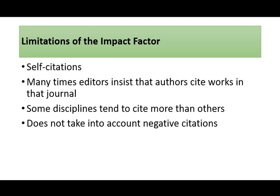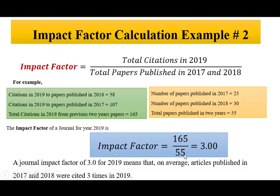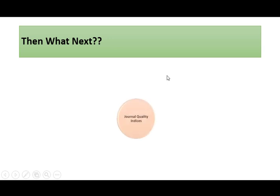Another major criticism of impact factor is that it does not take into account negative citations. Looking at the formula — citations divided by number of papers published — out of 107 citations, we don't know how many were positive versus negative. During a literature review, some authors may criticize a paper, for example noting a smaller sample size, yet those negative citations still count and contribute towards the impact factor. This is one of the biggest criticisms of impact factor.